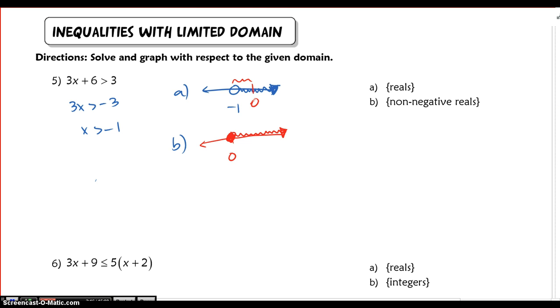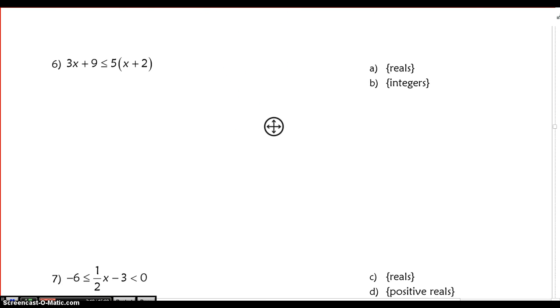Now in problem number 6, I want to do the same thing. So I'm going to solve this here. And I get my solution of x is greater than or equal to negative 1 half. Again, when I graph this with respect to all reals, I'm going to have a normal graph here since negative 1 half is a real number as well as all values greater than or equal to it.